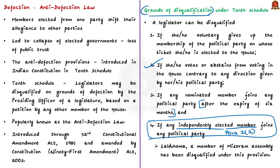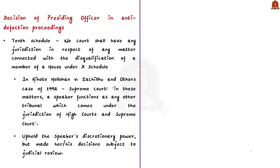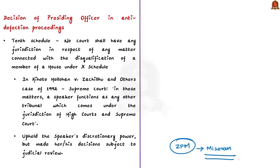Based on this provision under paragraph 2.2 of the 10th Schedule, the Mizoram Assembly member has been disqualified. The member had declared himself as a representative of Zoram People's Movement, though he was elected as an independent candidate. According to the Speaker, the member lost the character of an independent legislator because of this declaration. Zoram People's Movement is a registered political party in Mizoram. Under the 10th Schedule, if any question of disqualification arises, it shall be referred to the Chairman or Speaker of the house, whose decision shall be final.